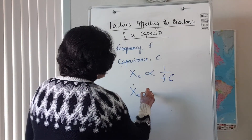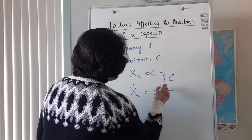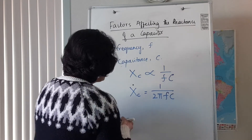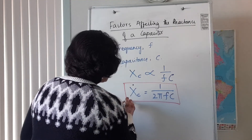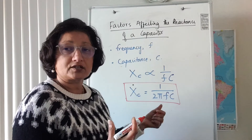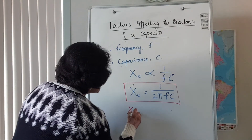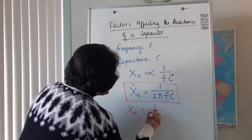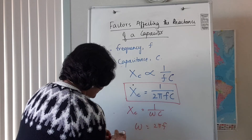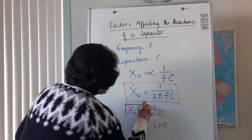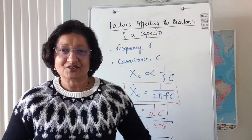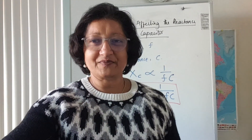The constant of proportionality gives us the formula: Xc = 1 / (2πfC). On your formula sheet it's given slightly differently — Xc = 1 / (ωC), where ω = 2πf. If you put both together you end up with that same formula for reactance. That's all for this lesson — bye for now, and I hope that helped.